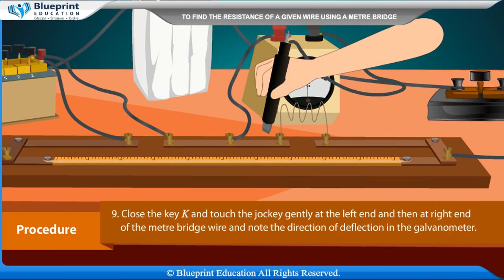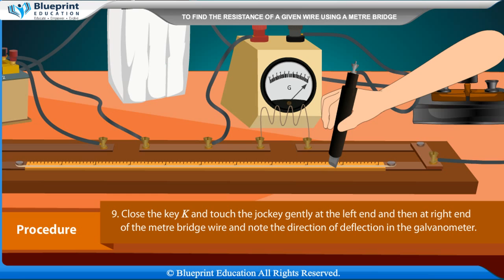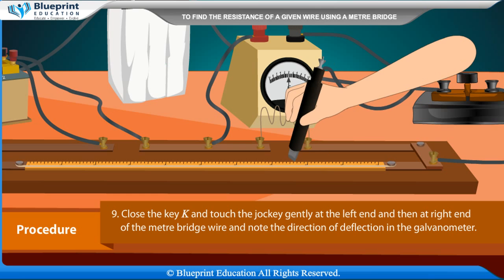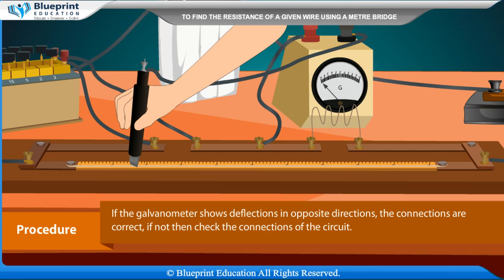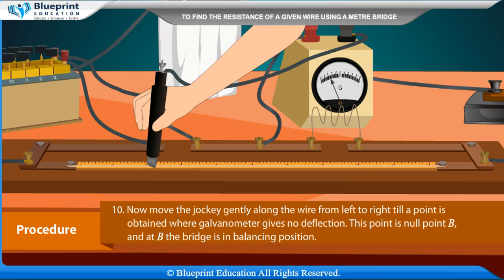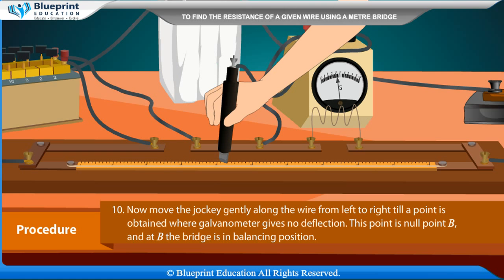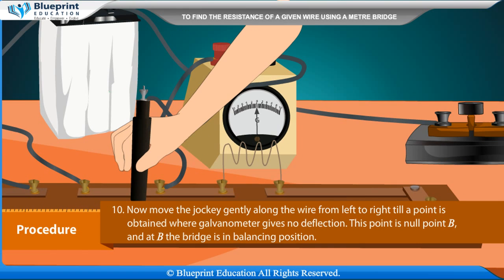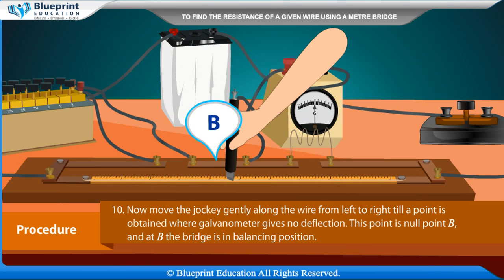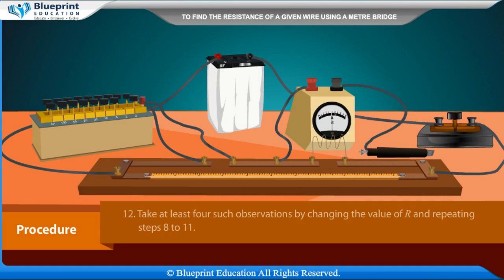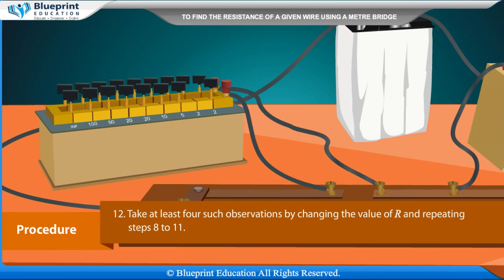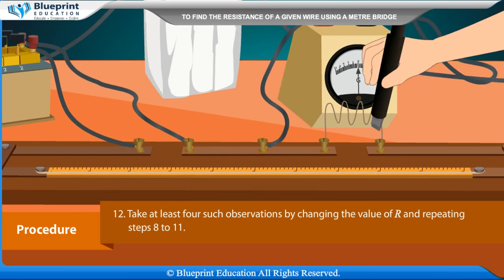Close key K and touch the jockey gently at the left end and then at the right end of the meter bridge wire, noting the direction of deflection in the galvanometer. If the galvanometer shows deflections in opposite directions, the connections are correct; if not, check the circuit connections. Move the jockey gently along the wire from left to right until a point is found where the galvanometer gives no deflection — this is the null point B, where the bridge is balanced. Note the position of null point B and record length AB = L.